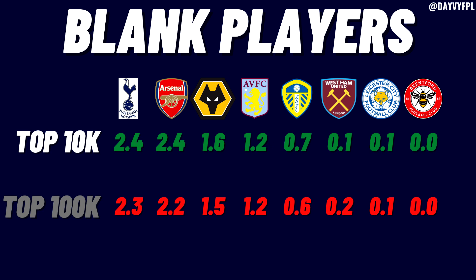This team breakdown highlights where you can gain differentials. Brentford is owned by virtually no one, so Ivan Toney could be a massive differential. Leicester assets are similarly low-owned, and if you're using the free hit I'd definitely target some Leicester differentials. The majority of managers own that Spurs and Arsenal triple-up, so those are your safer template options.